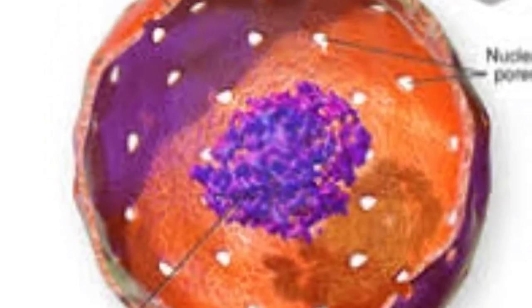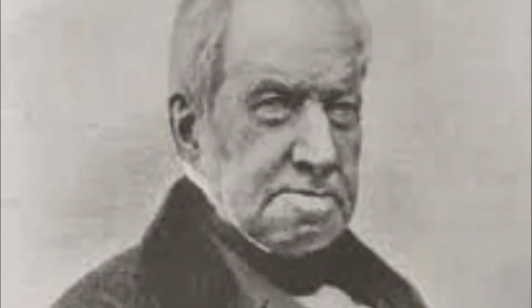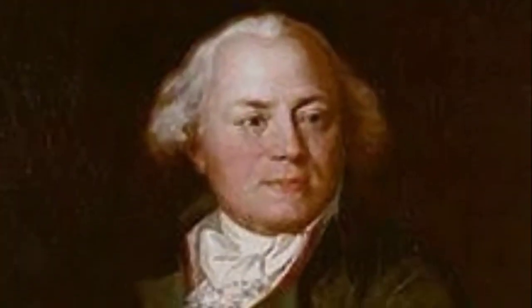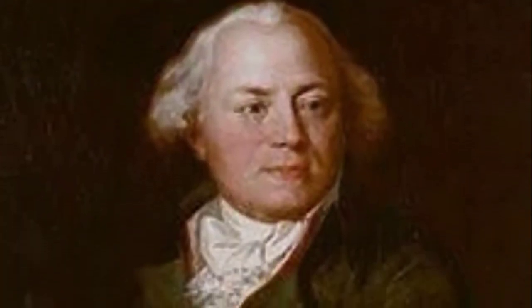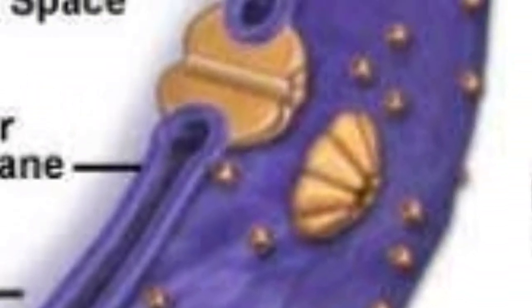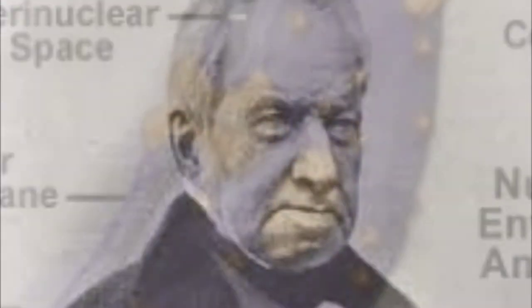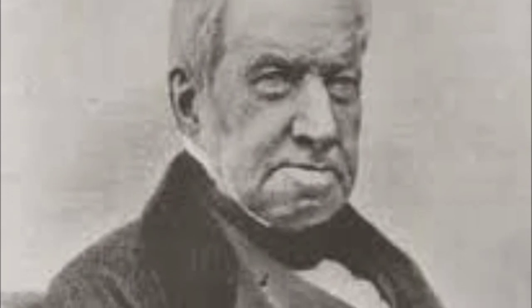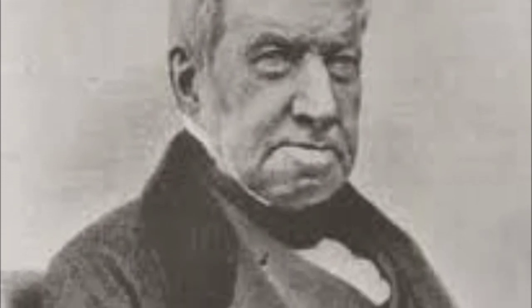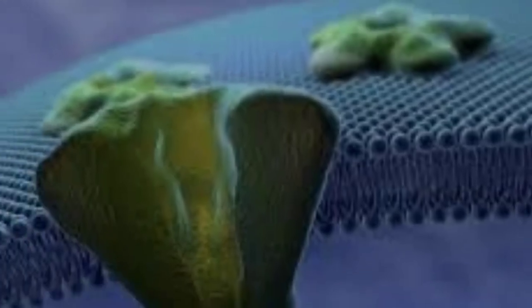Nucleus is the center part of the cell, discovered by Robert Brown in 1831, but it was first discovered by French Bayer in 1804. The nucleus contains hereditary information. Nuclear membrane is the outer membrane of the nucleus, discovered by Robert Brown in 1833. Nuclear membrane protects and regulates the nucleus.